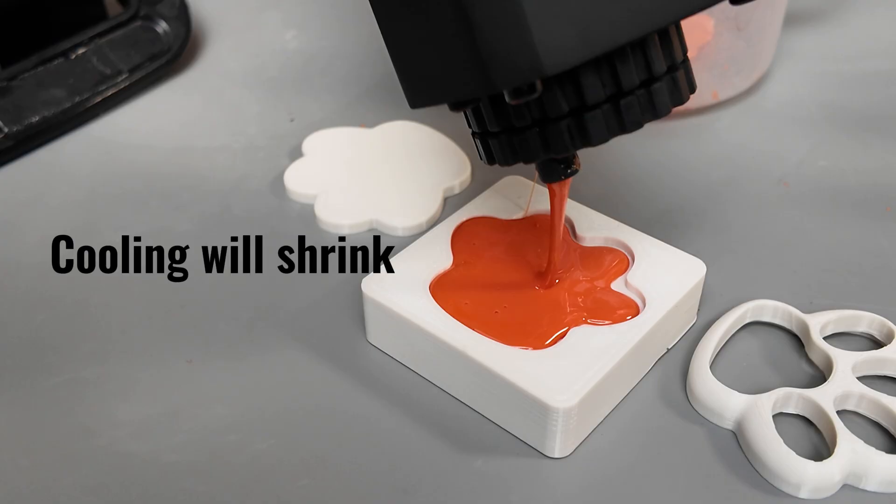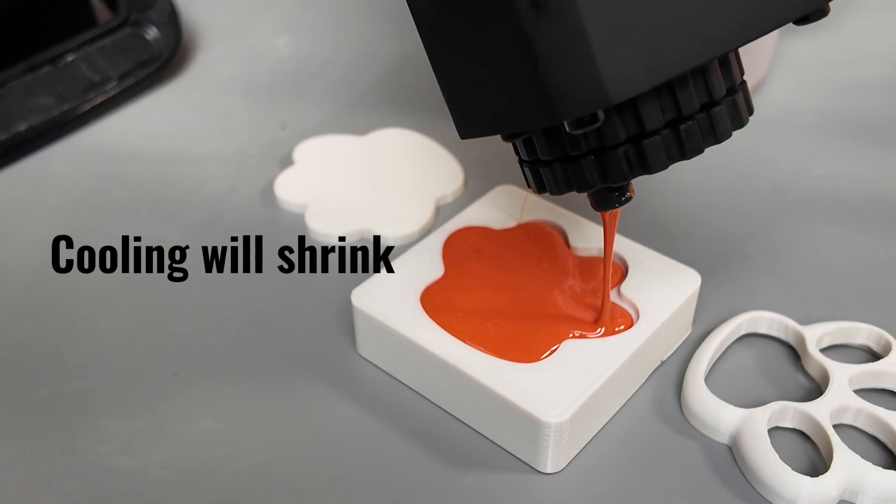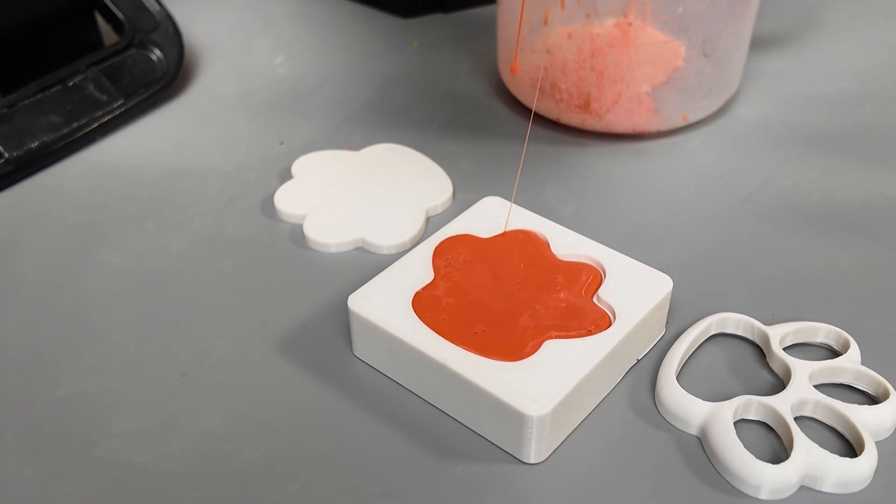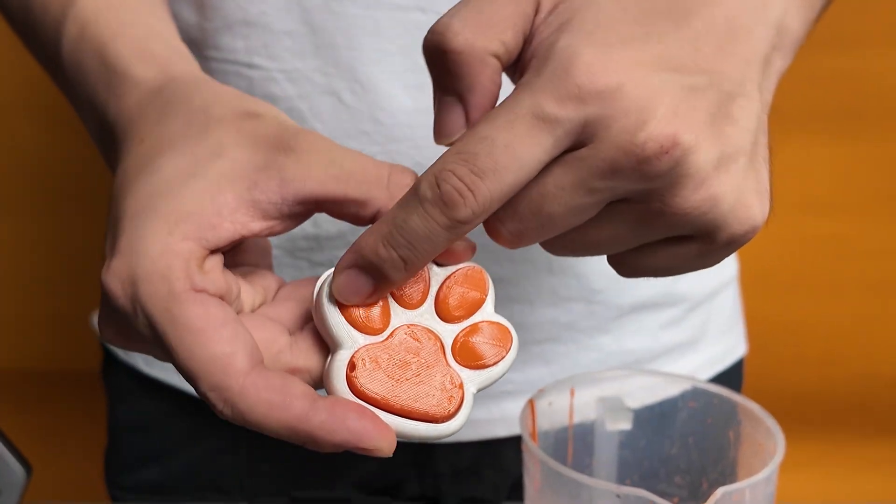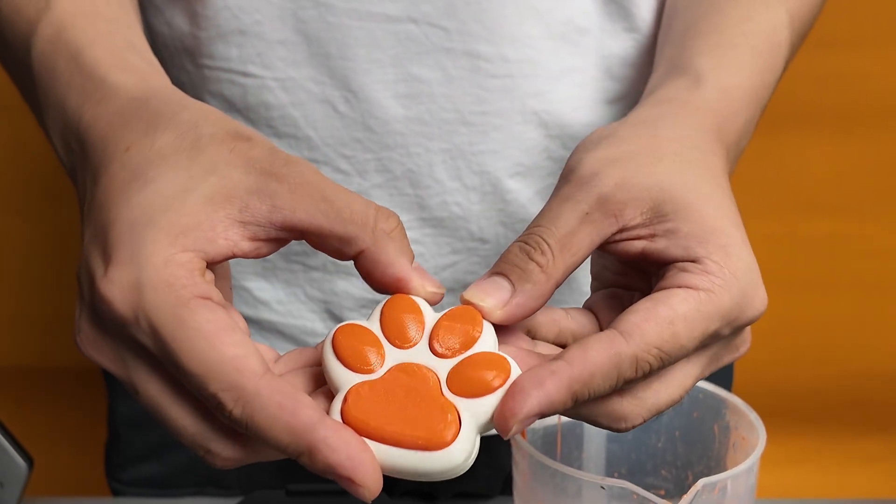Because soft gel slightly shrinks as it cools, we recommend slightly overfilling the mold. Once cooled, assemble the hard shell around the soft core, and you've got a cat paw figure that's hard on the outside and soft on the inside.